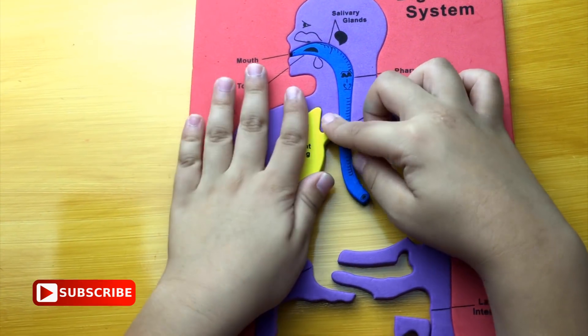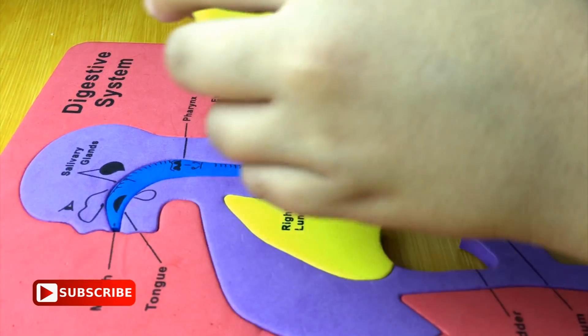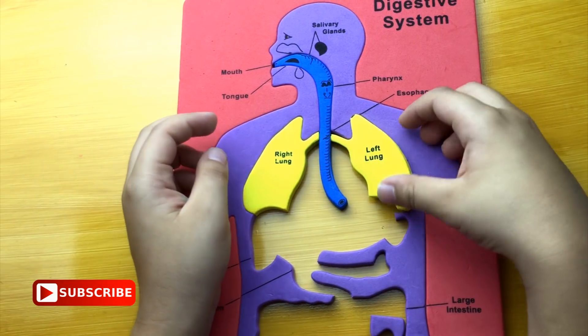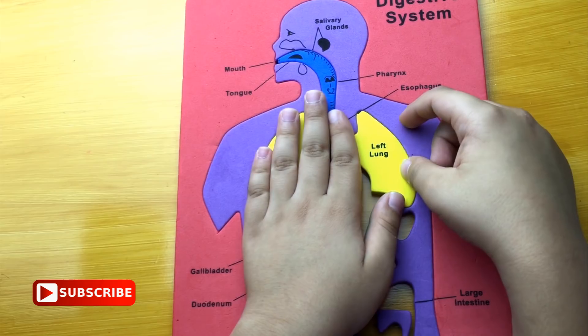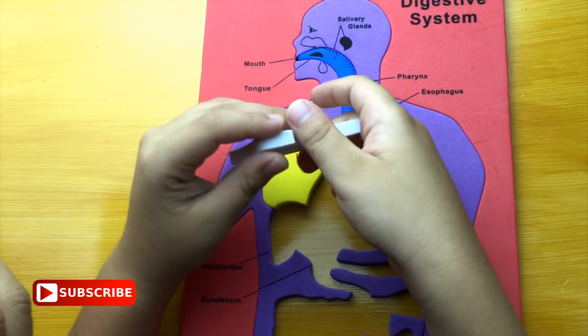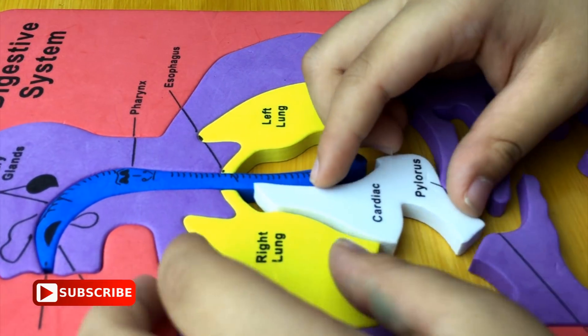This is right lung. This is left lung. You put this next to the right lung.